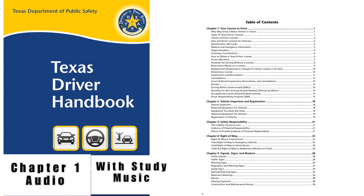Class C Driver License covers: 1. A single vehicle or combination of vehicles not included in Class A or Class B. 2. A single vehicle with a GVWR of less than 26,001 pounds, towing a trailer not to exceed 10,000 pounds GVWR, or a Farm Trailer with a GVWR that does not exceed 20,000 pounds. 3. An autocycle, defined as a motor vehicle other than a tractor that is designed to have no more than three wheels on the ground when moving, equipped with a steering wheel, and seats that do not require the operator to straddle or sit astride, and manufactured and certified to comply with federal safety requirements for a motorcycle. A Class C Driver License does not permit a person to drive a motorcycle or moped.